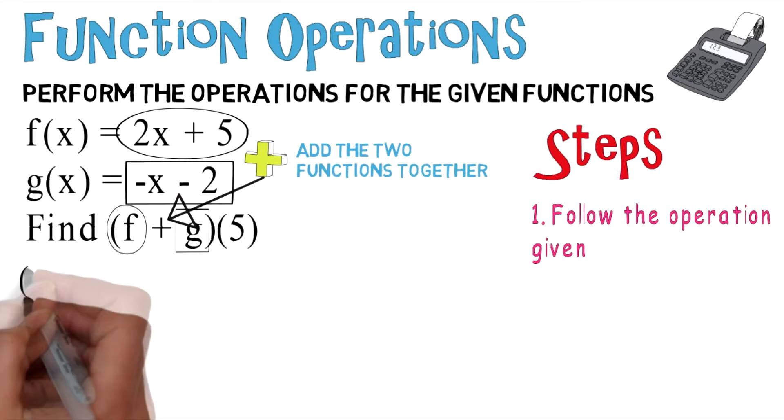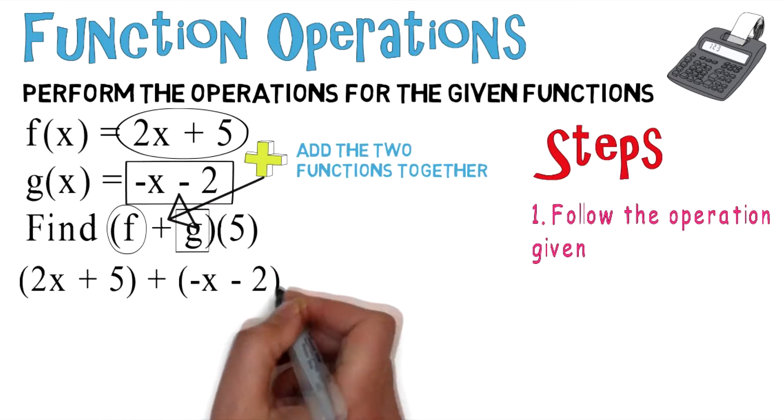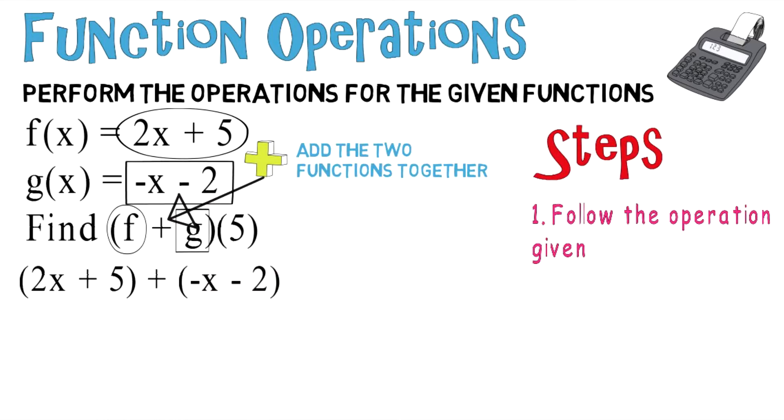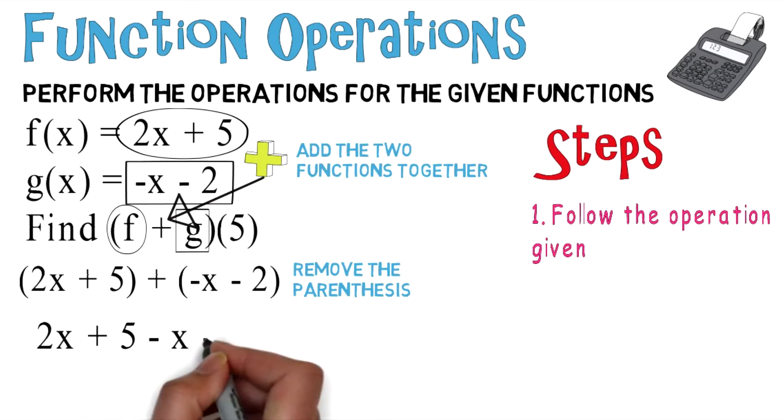So adding those two functions together, you wind up getting 2x plus 5, and you're going to add that to negative x minus 2. And don't forget to remove the parentheses. After you do that, you're going to have a string of terms: 2x plus 5 minus x minus 2.